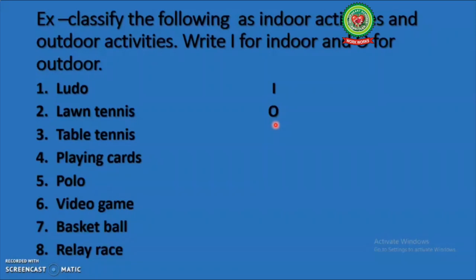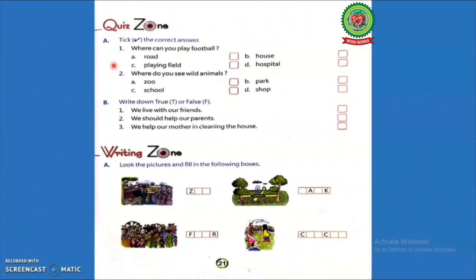Let's discuss the exercises of page 21. Open your book at page 21, quiz zone, exercise A. Take the correct answer. First, where can you play football? A: road, B: house, C: playing field, D: hospital. Second, where do you see wild animals? A: zoo, B: park, C: school, D: shop. You people have read the chapter, now you will do this exercise yourself.